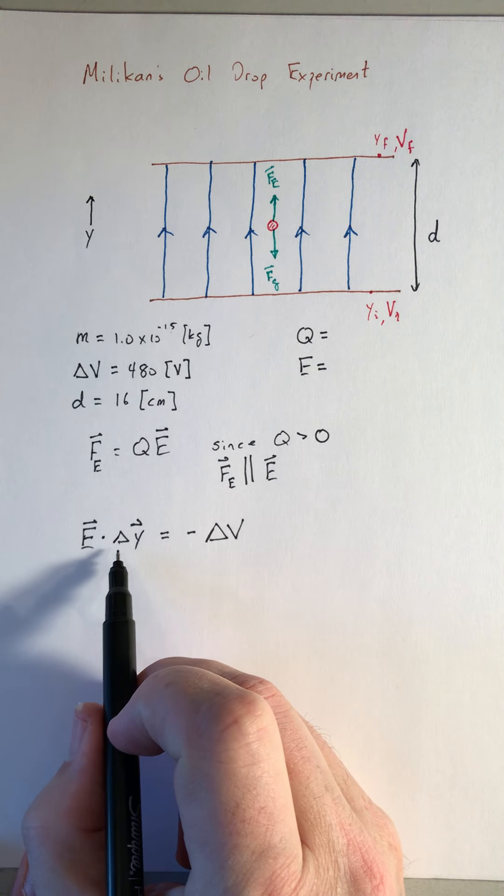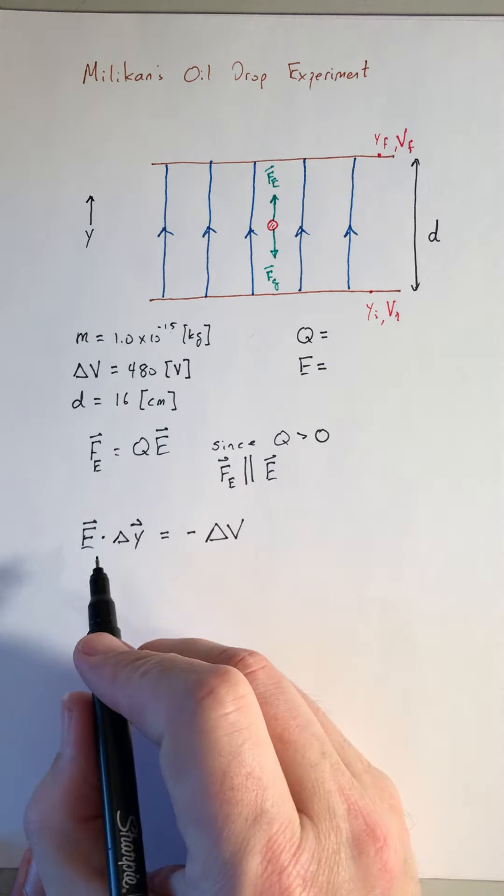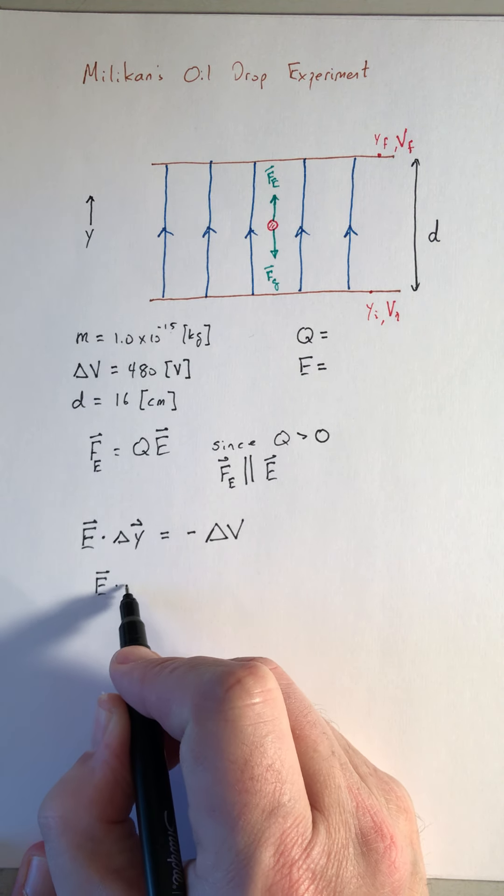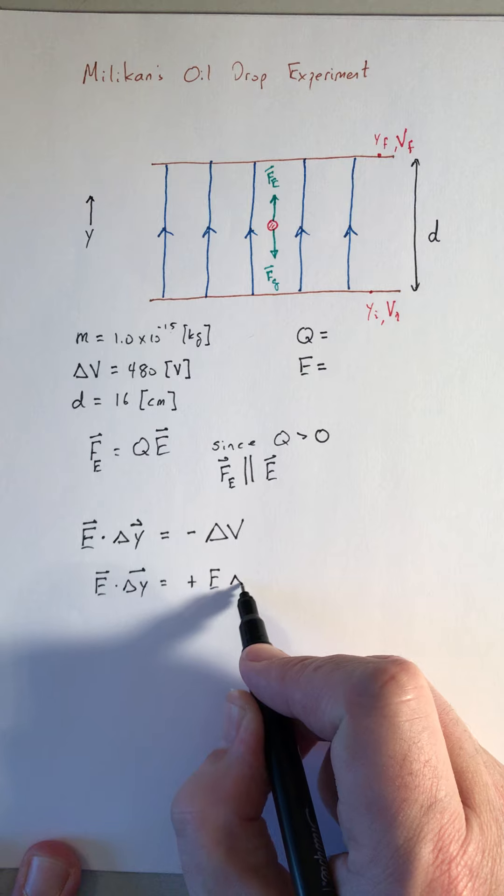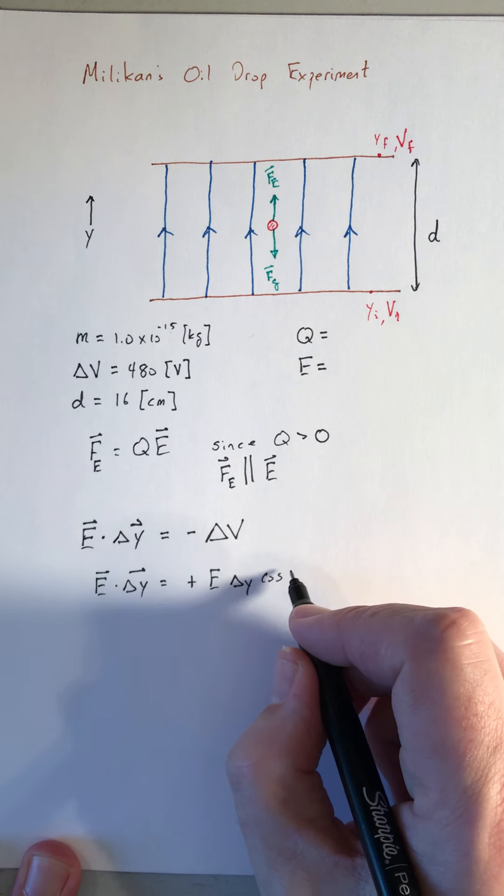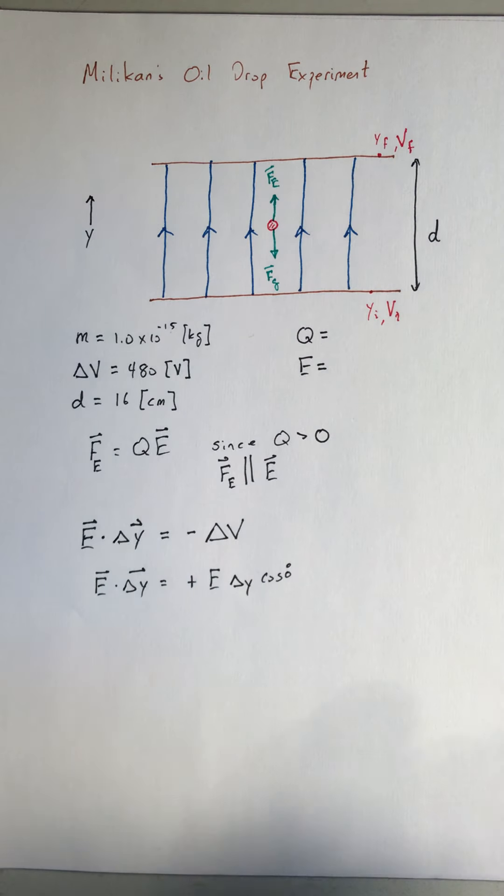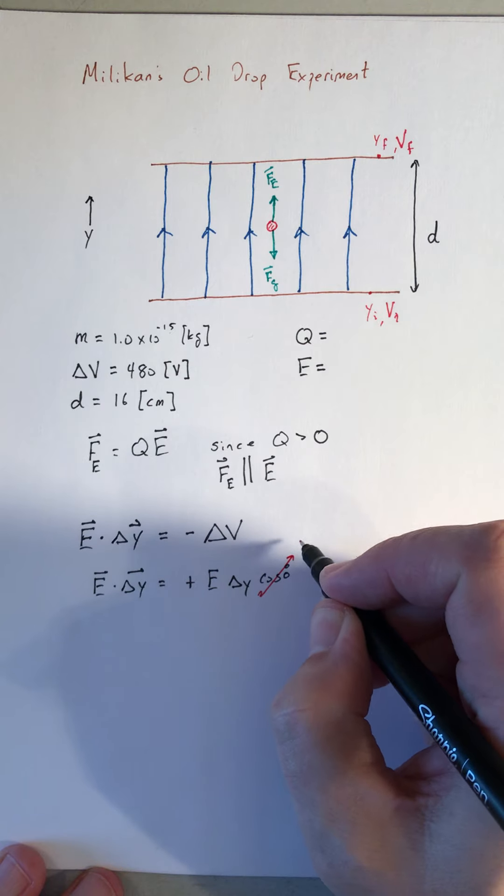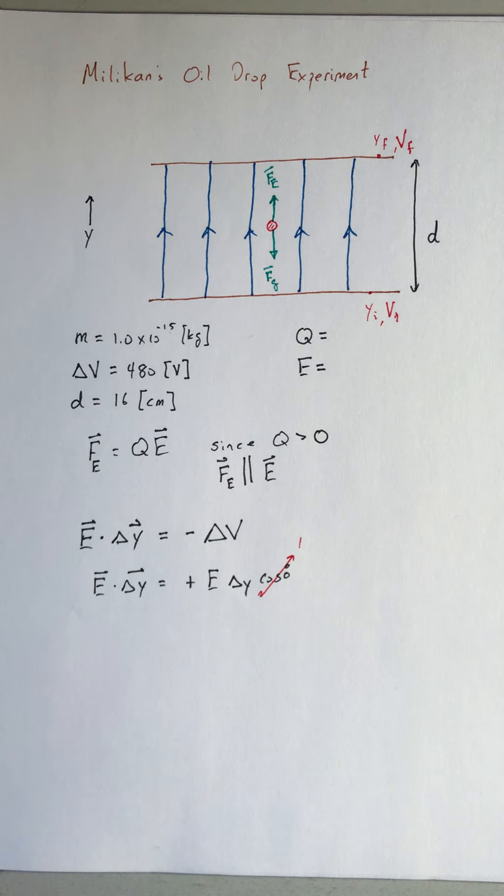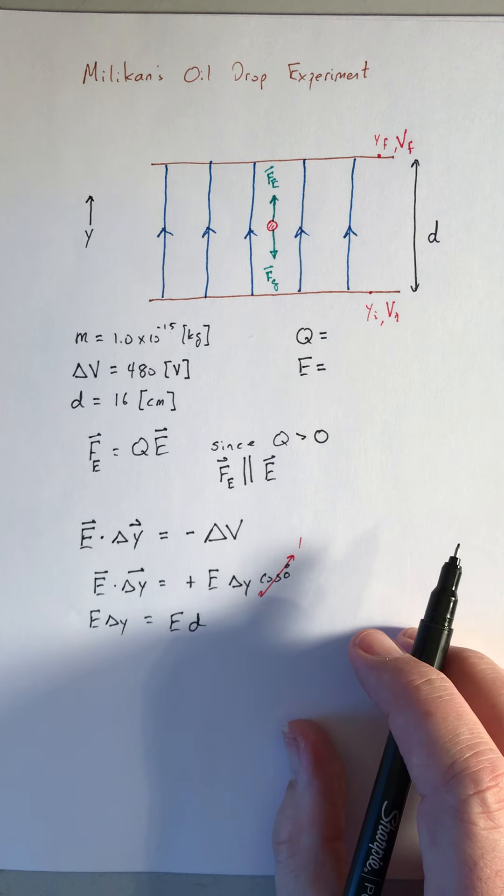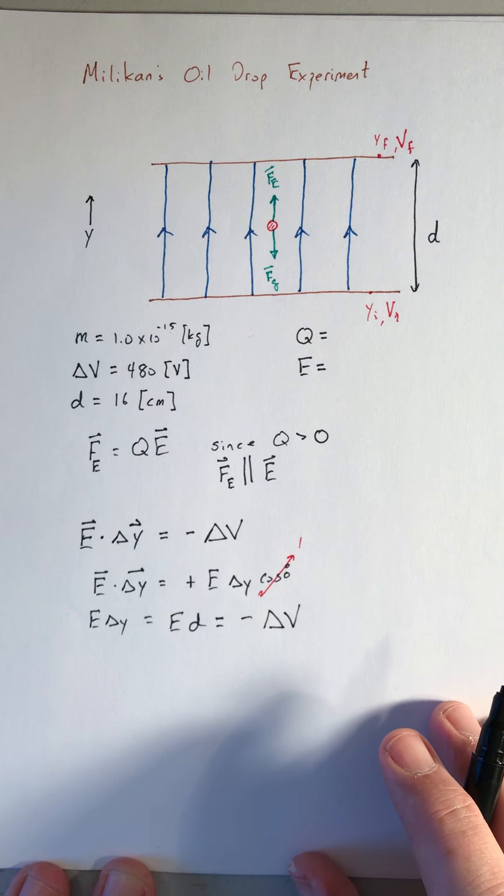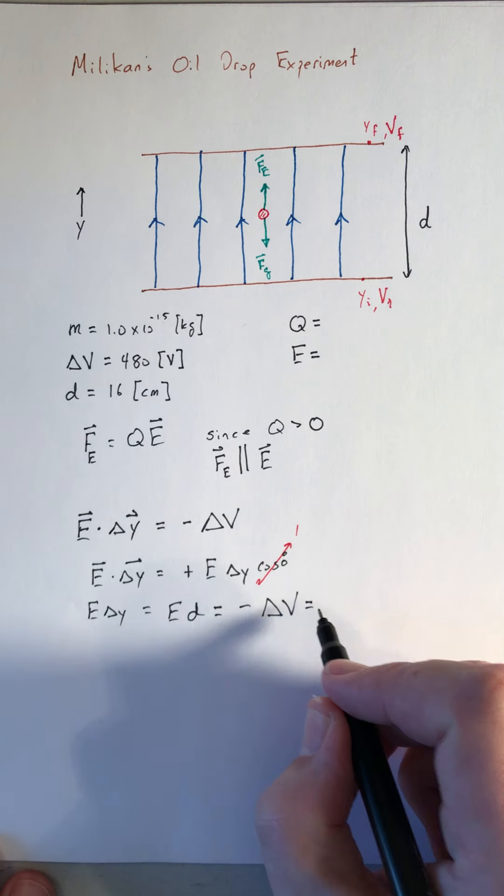So we'll get E dotted into delta Y. Those are both parallel to each other. So E dot delta Y is going to be plus E delta Y times cosine of zero degrees and cosine of zero degrees is one. E delta Y is going to be the magnitude of the electric field times the plate separation d. And that will equal minus the change of potential.